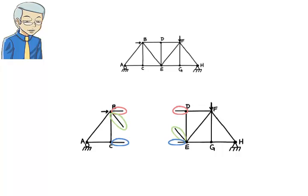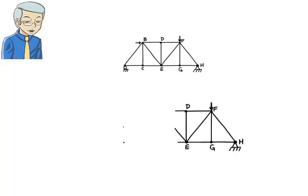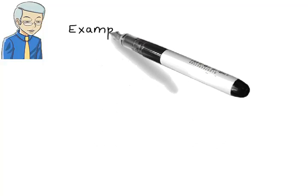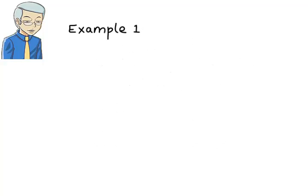Generally, we may be able to cut a truss in several ways. The challenge in using the method of sections is to identify an effective way to cut the truss, and then decide how to use the equilibrium equations to find the desired unknown forces. Let's shed more light on the subject using three examples.